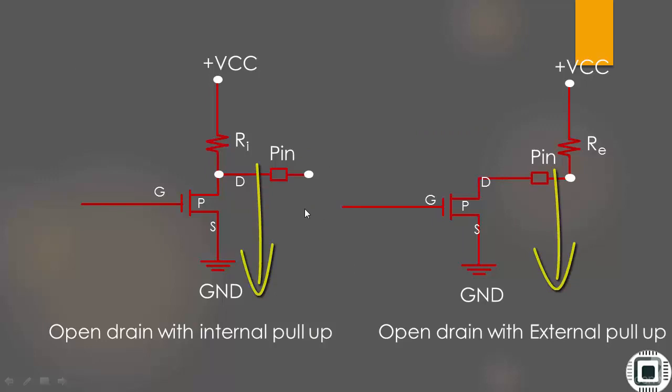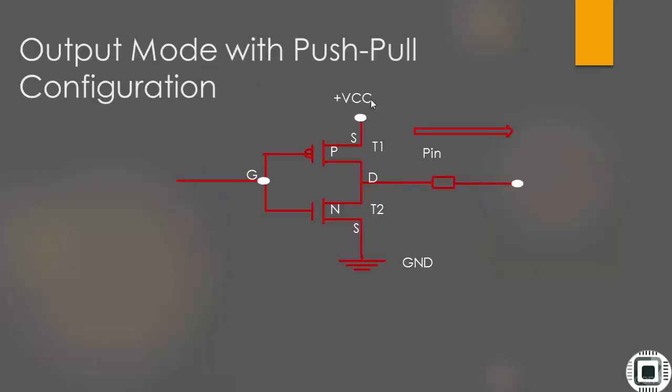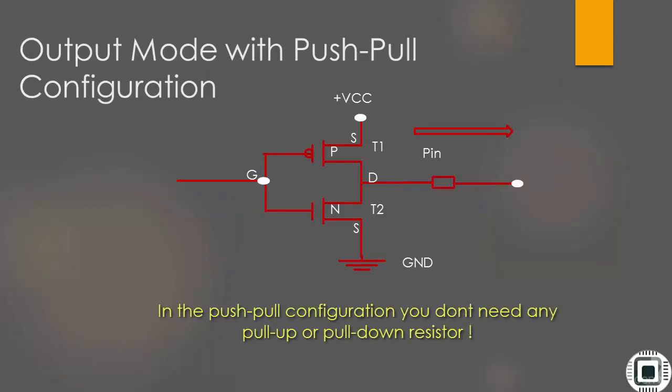In order to pull the output high in the open drain configuration, you need a pull-up resistor, otherwise the pin will be floating. But in the push-pull configuration, you don't need any pull-ups or pull-down resistors.